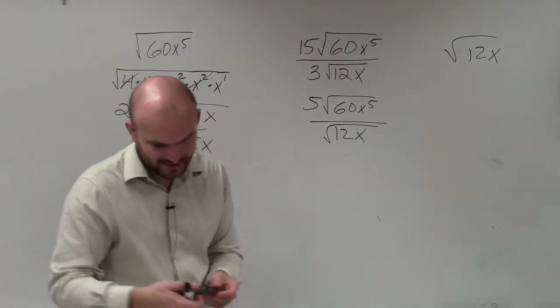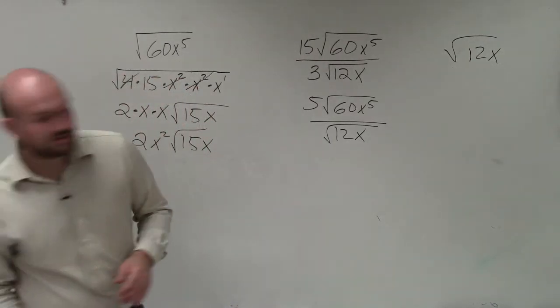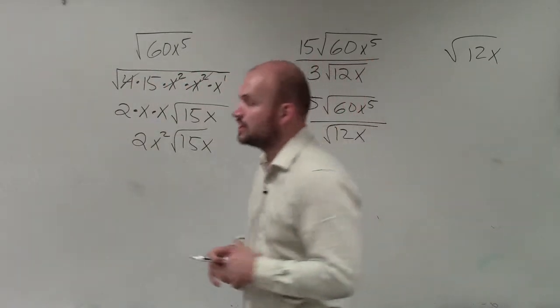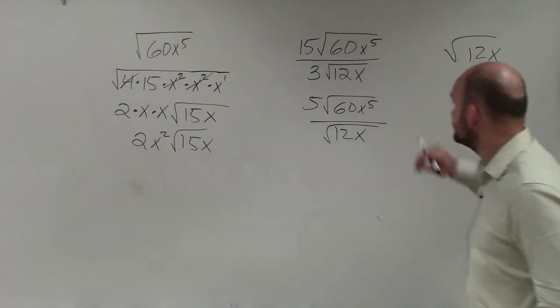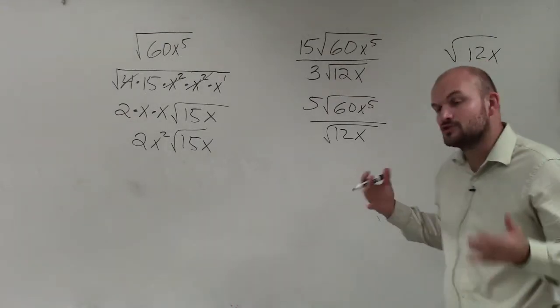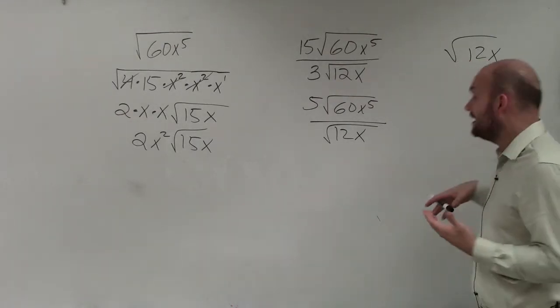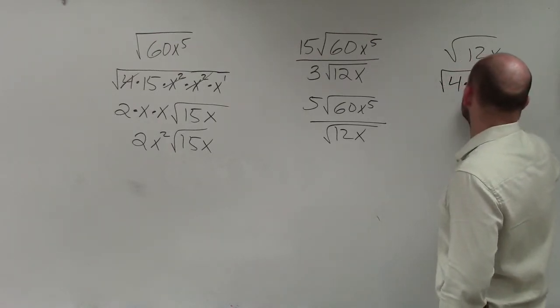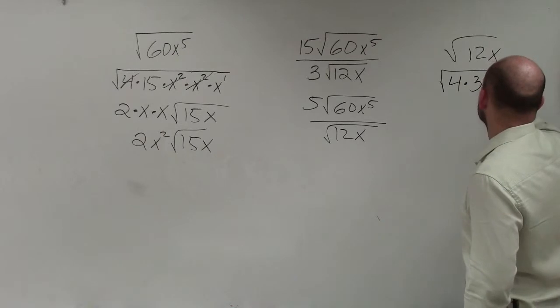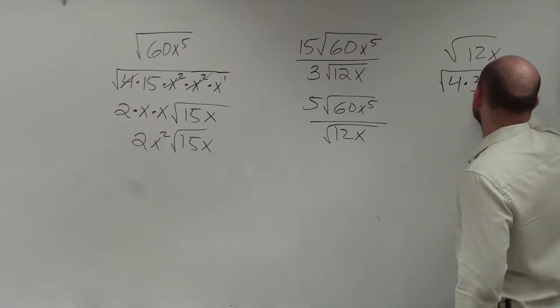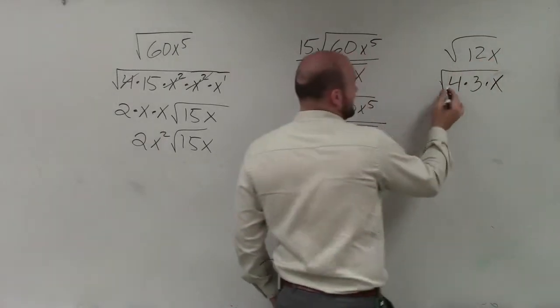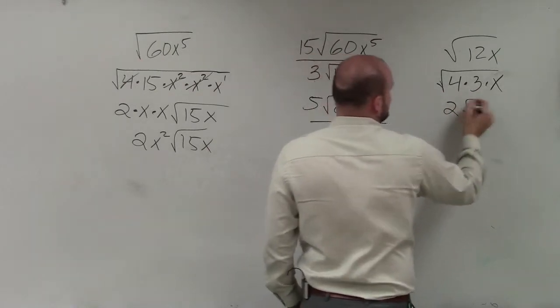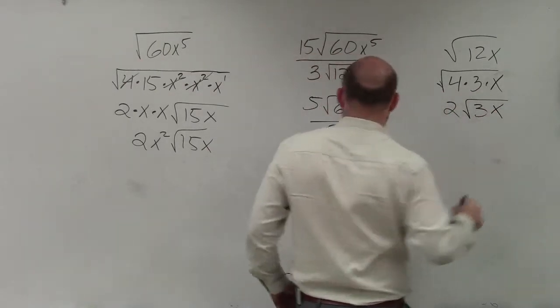Now, the next thing is I want to go ahead and simplify the square root of 12. So to go ahead and do that, again, I'm going to look at the largest square number that divides into 12. And 4, again, is going to be my lovely square number I'm going to use. So I have 4 times 3 times x here. Well, again, I can take the square root of 4, which is 2. I cannot take the square root of 3 or of x, so that's going to be left with 3x.